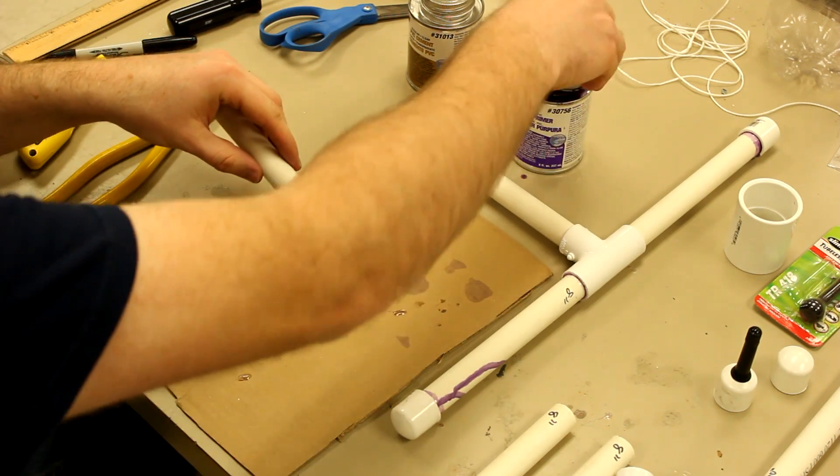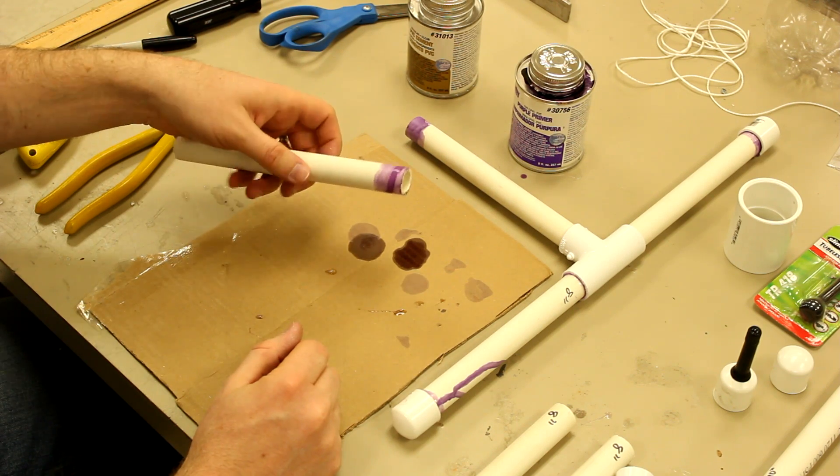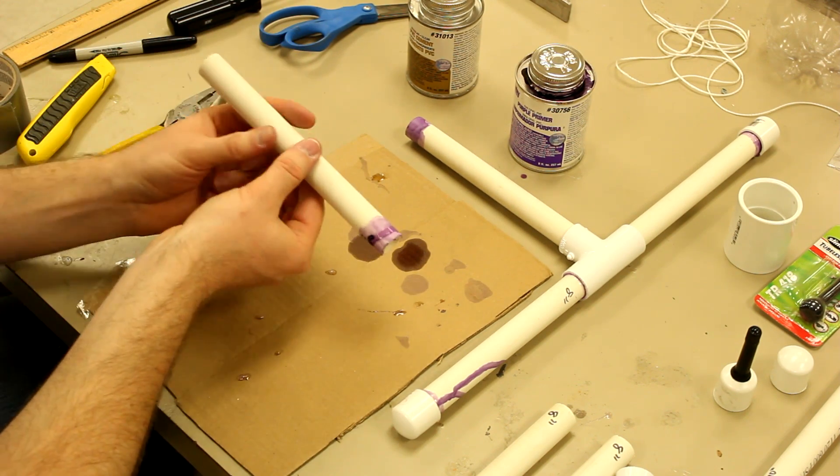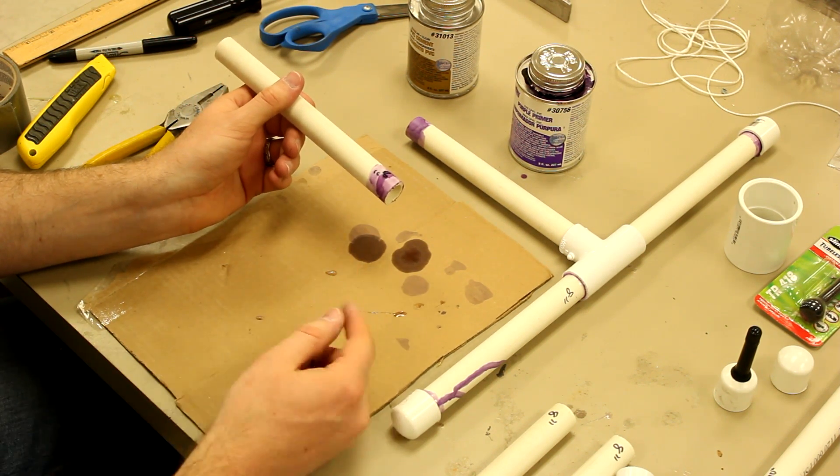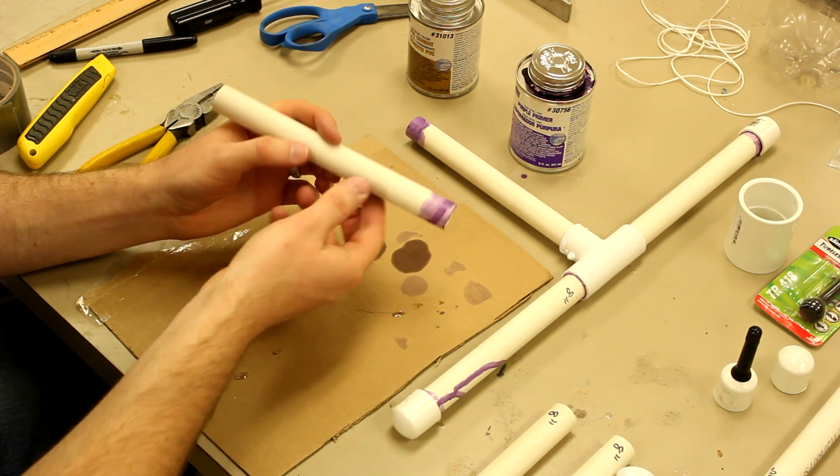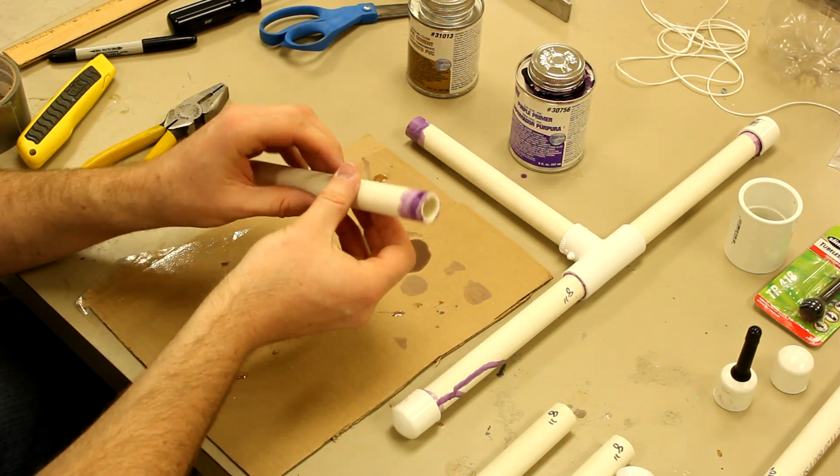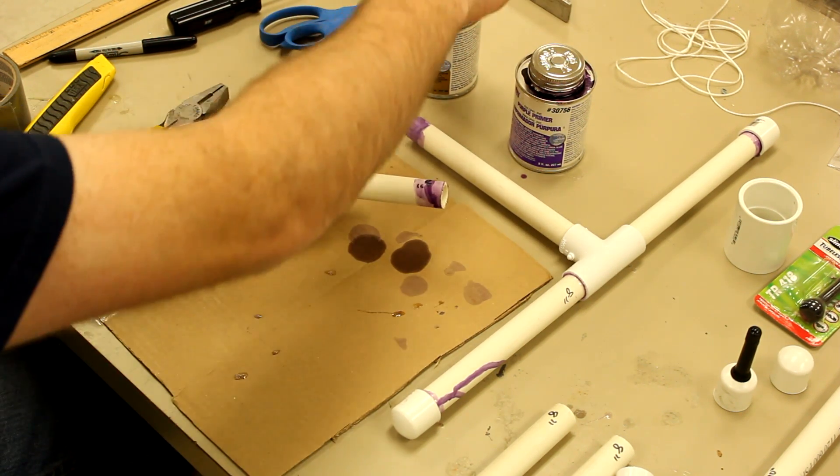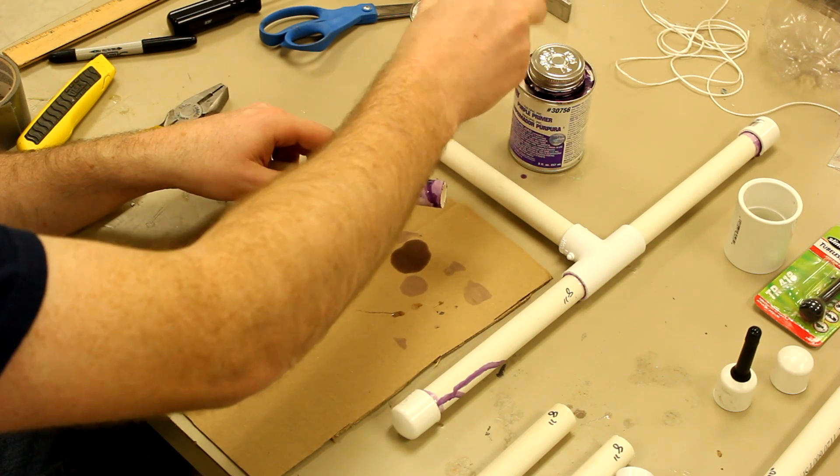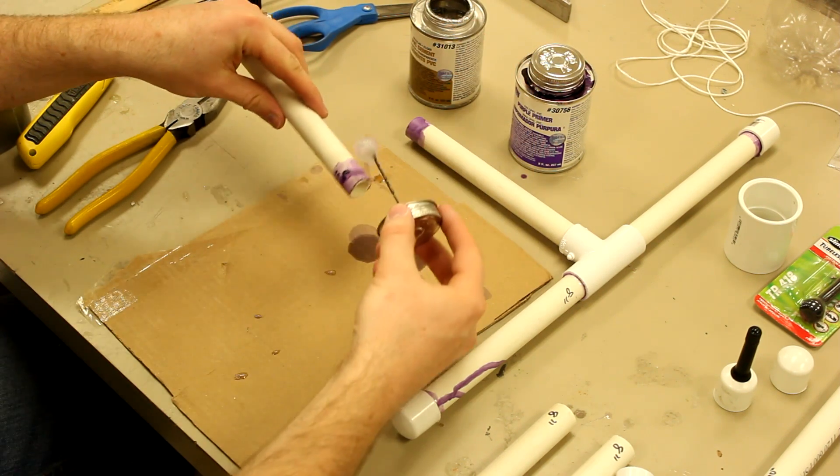Now this stuff smells really bad so you want to do it either in a well ventilated area or it's best and easiest to just do it outside because it can also drip and make a bit of a mess. Once you have the primer on, it'll dry fairly quickly and you can add some cement. It doesn't take much but you do want to coat it all the way around.